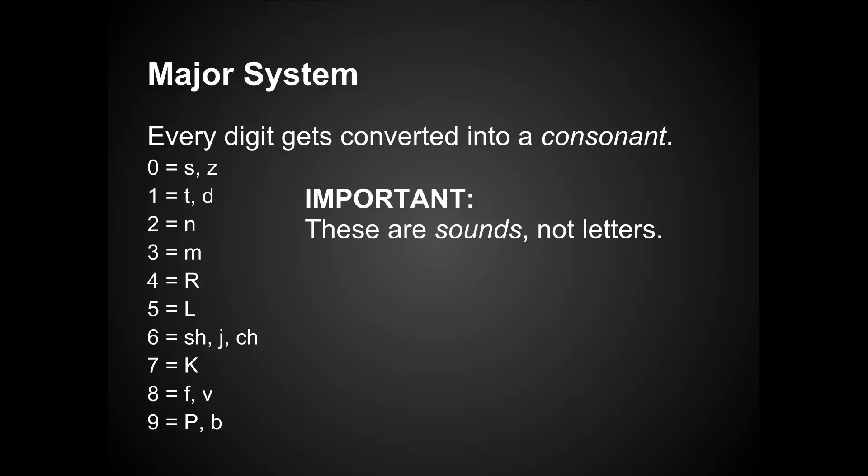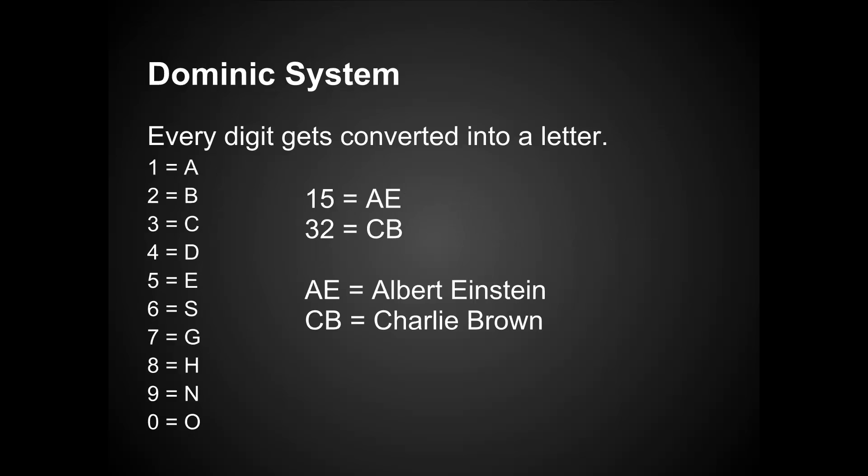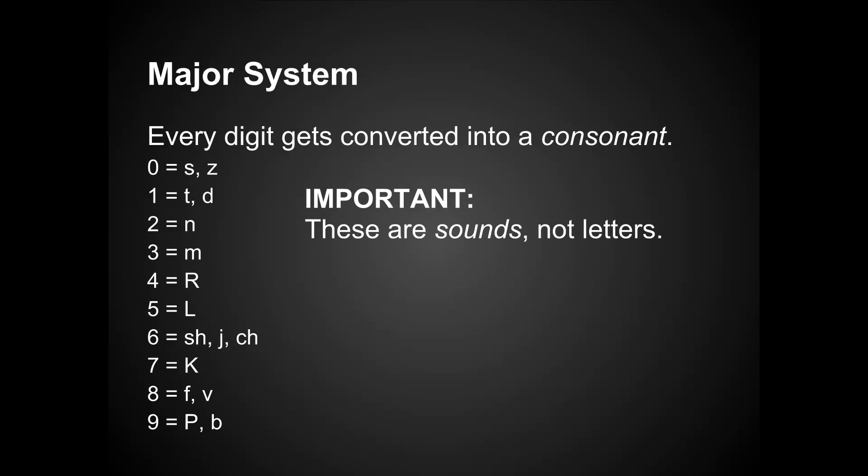The major system is different from the Dominic system. The Dominic system is a letter system — 1 represents the letter A, 2 represents the letter B. These are letters, not sounds. When you get to the major system, 0 represents a sound. It doesn't represent the letter S — it represents the sound S or Z.